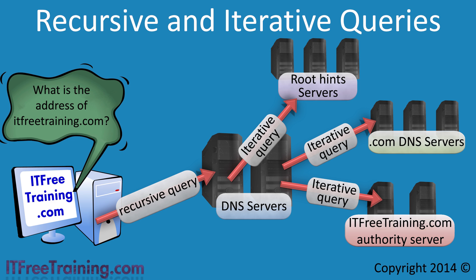When DNS servers are deployed on a network, some companies will choose to switch off recursion on certain DNS servers. For example, if a DNS server is on a protected secured network, it should never be contacting the internet directly. For this reason, recursion is switched off, meaning recursive queries will go to DNS servers that are dedicated for that particular purpose. For example, all ISPs should have DNS servers that are dedicated to resolving DNS queries.